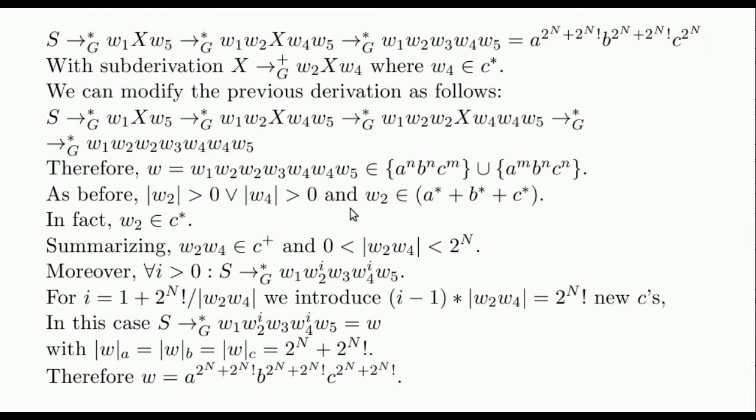But we can also deduce that w2 must be composed of c's, because if it were composed by, say, a's, then the word would have more a's than b's, and more b's than c's, and it would not be in the language. Therefore, w2w4 is composed of c's and it is not empty.